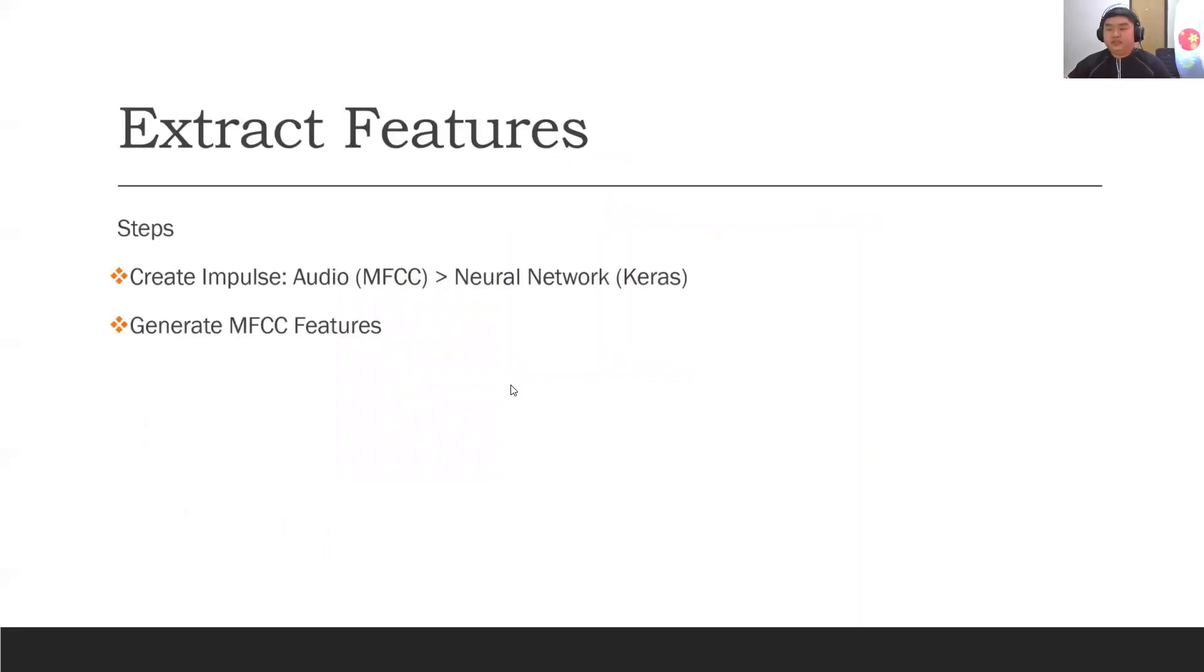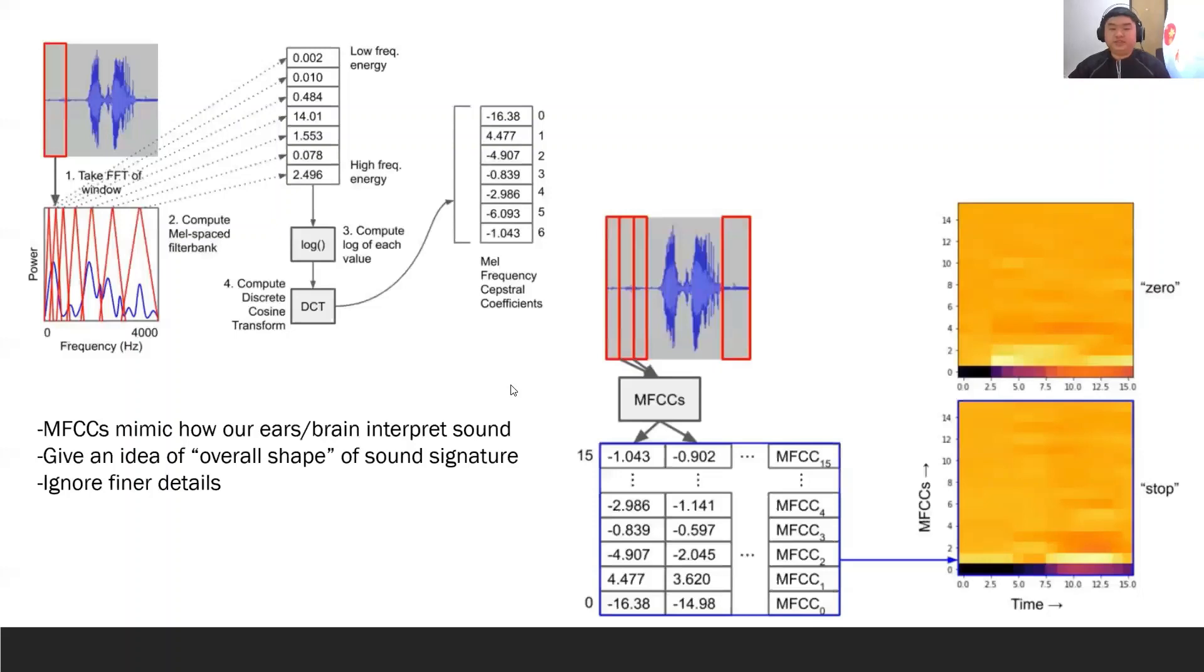The extract feature for the project is done using field step which creates the impulse for the MFCC and the neural network in the class. The main extracted feature for this project is the Mel Frequency Cepstral Coefficients, MFCC.